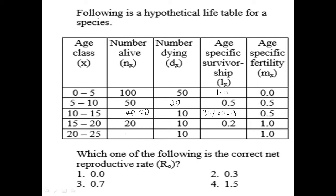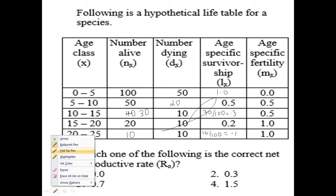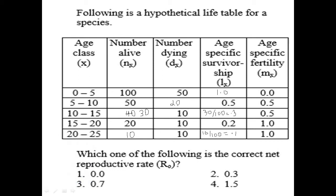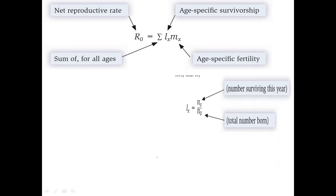For the 20–25 age group, out of 20 individuals, 10 died, so the remaining number is 10, and Lx equals 10 divided by 100, which is 0.1. So summarizing all Lx values: for 0–5 it is 1.0, for 5–10 it is 0.5, for 10–15 it is 0.3, for 15–20 it is 0.2, and for 20–25 it is 0.1.